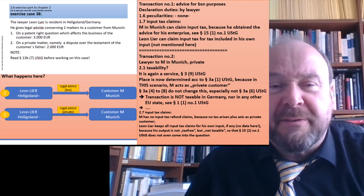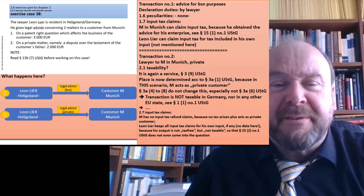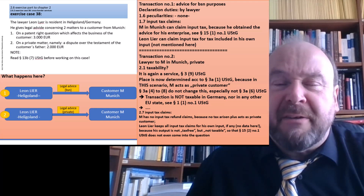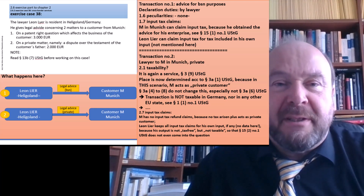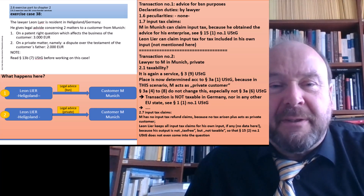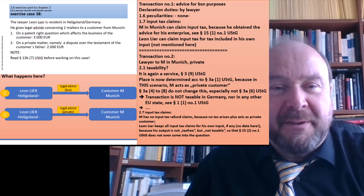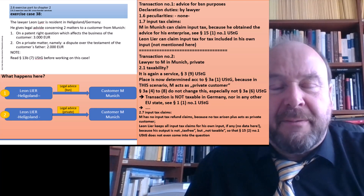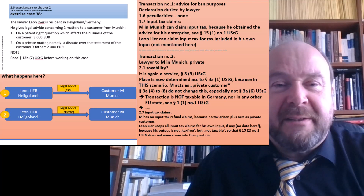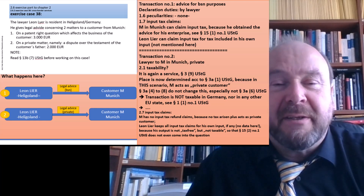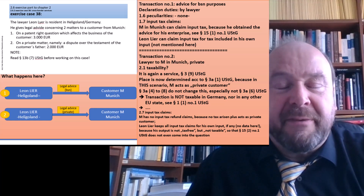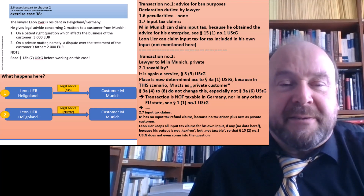Leon Leier himself keeps all input tax claims for his own inputs — for example, purchases of office material or services used to produce this output. We have no concrete data on that here. However, if there are input taxes, he is still entitled to deduction. His output here is not tax-free; it is simply not taxable, so it is not covered by §15(2) number 1. Only tax-free output can block deductibility — if something is not taxable at all, it has no negative effect on input tax recovery.